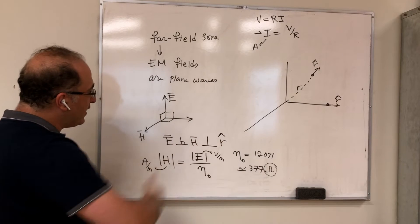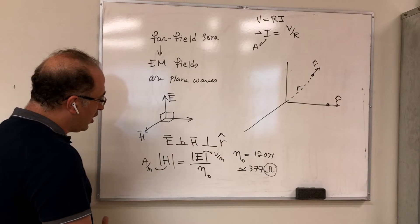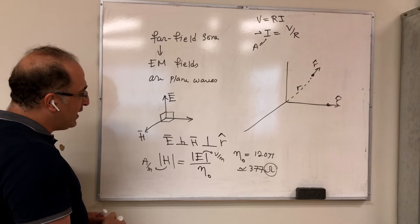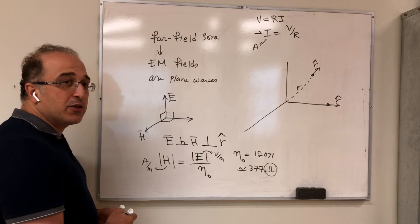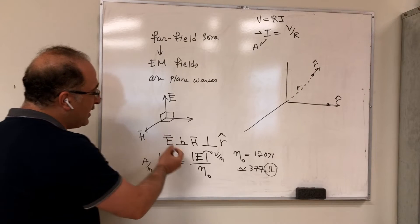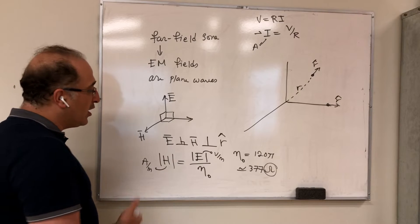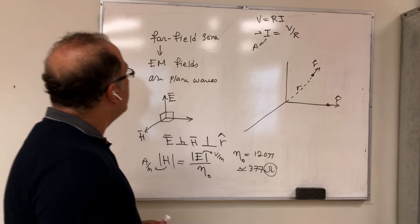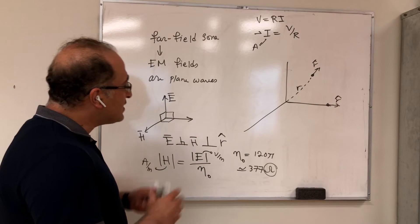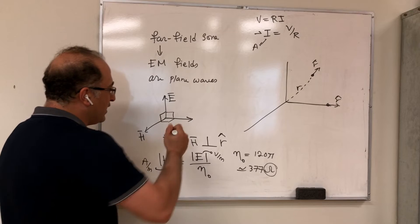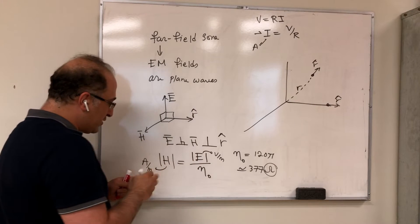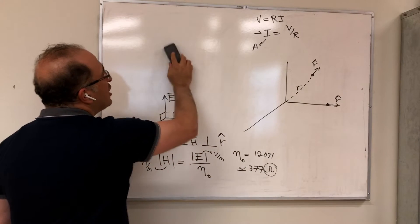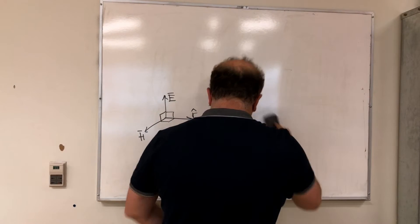So those are the two important things we have in the far-field zone: E and H are perpendicular to R, and H is also related to E. We call this transverse electromagnetic because E, H, and the direction of propagation are all perpendicular — this is our TEM. Now let's write the equation for E in the most general form and then try to simplify that.